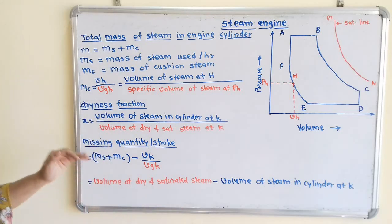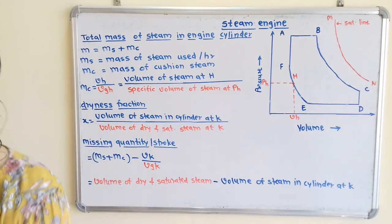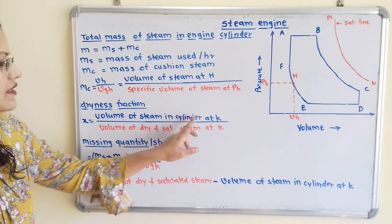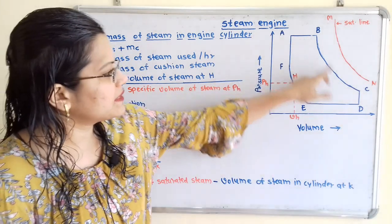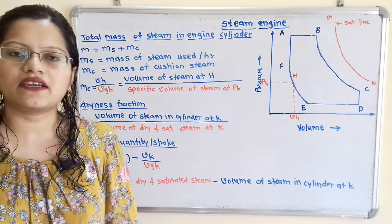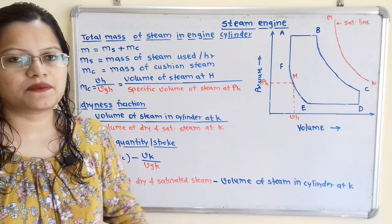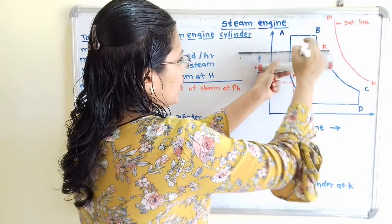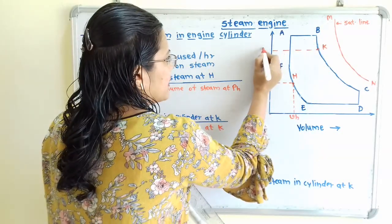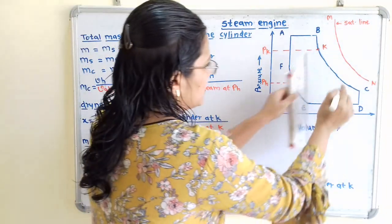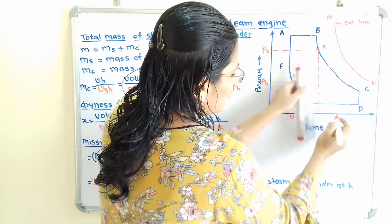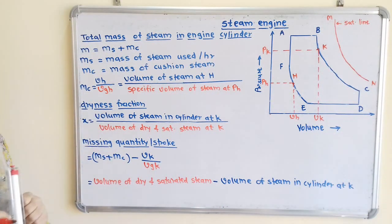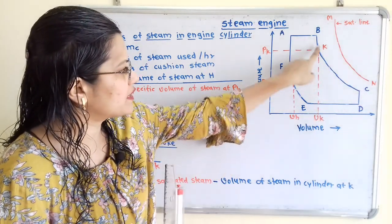Now we will move to the next concept: dryness fraction. Dryness fraction x equals the volume of steam in the cylinder at point K, divided by the volume of dry and saturated steam at K. We know that BC is the expansion curve, so we will take a point K on the expansion curve. At point K, we note pressure pk and volume vk on the horizontal axis.